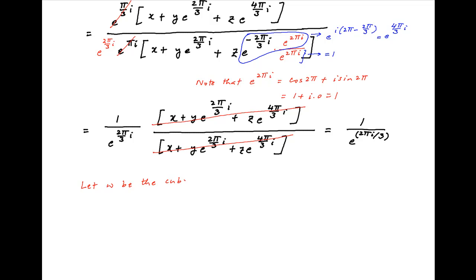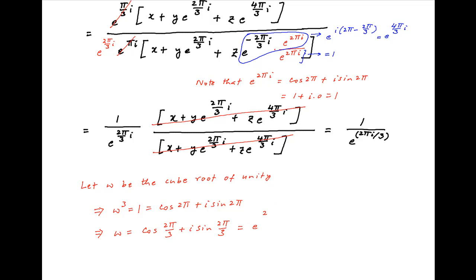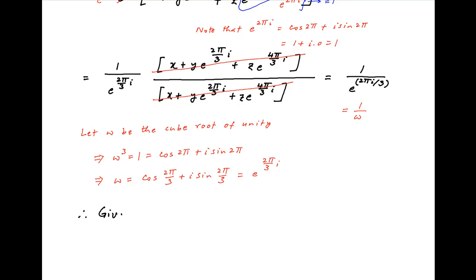Let ω be a cube root of unity, so ω³ = 1, which can be written as cos(2π/3) + i sin(2π/3), which equals e^(2πi/3). Therefore the value of the above expression is 1/ω. Multiplying and dividing by ω³, and noting that ω³ = 1 in the denominator, the value of this expression equals ω², which is the required answer.